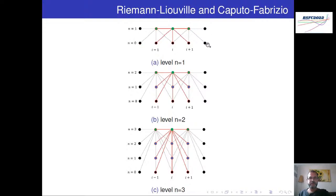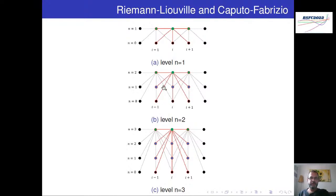Essas figuras representam o esquema de aplicação do método. Com as condições iniciais conhecidas, você calcula o nível 1 — que depende do nível 0. Para calcular o nível 2, você depende dos níveis 0 e 1. O nível 3 depende dos níveis 2, 1 e 0. Isso mostra que os operadores de Riemann-Liouville e Caputo-Fabrizio possuem o efeito de memória: ao calcular, a informação dos pontos anteriores não é descartada, ela ainda é utilizada no processo.